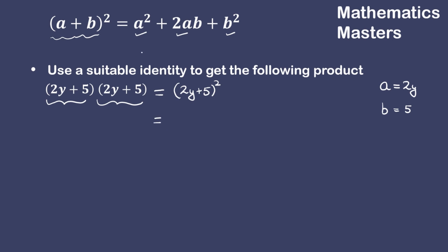Let us use the identity now. According to the identity, the square of the first term, that means the square of 2y, plus 2 times the first term which is 2y times the second term.